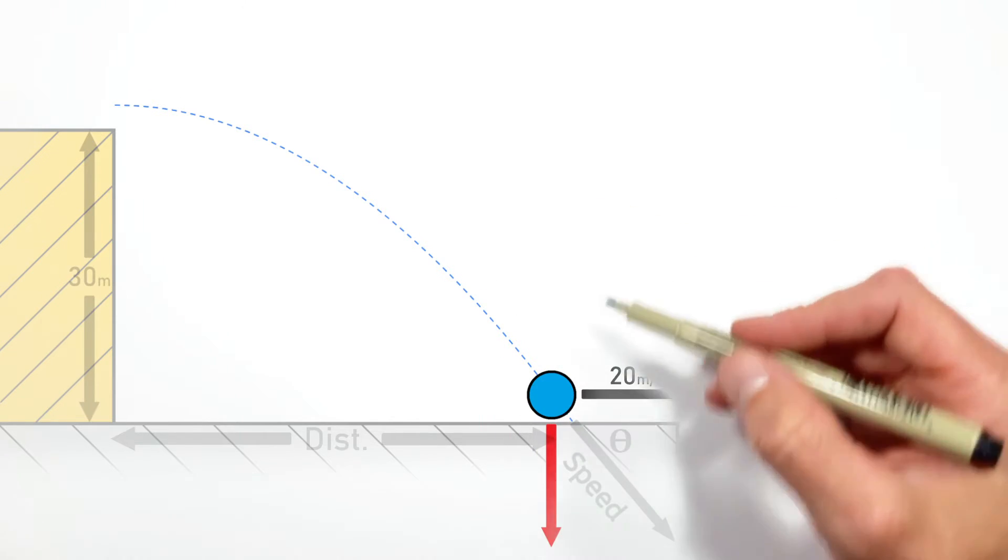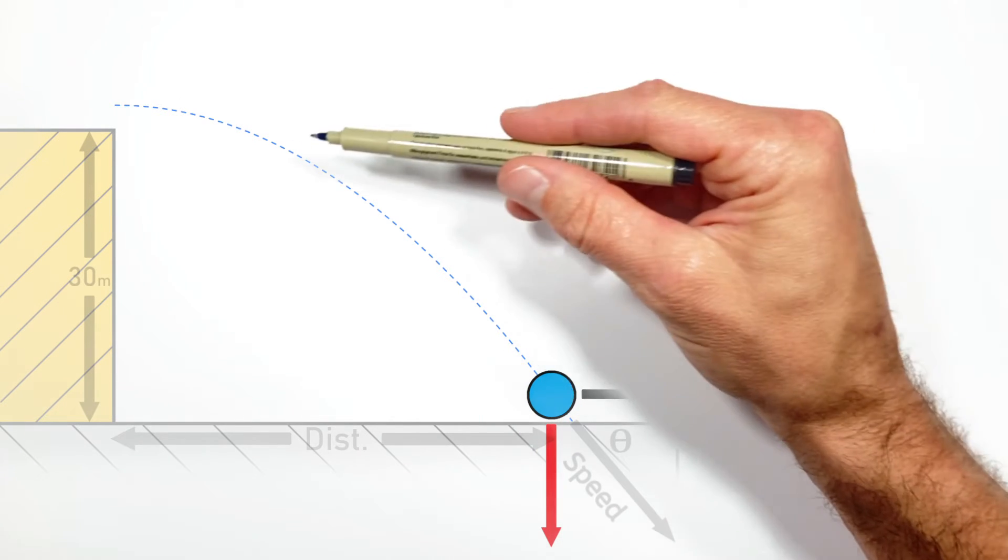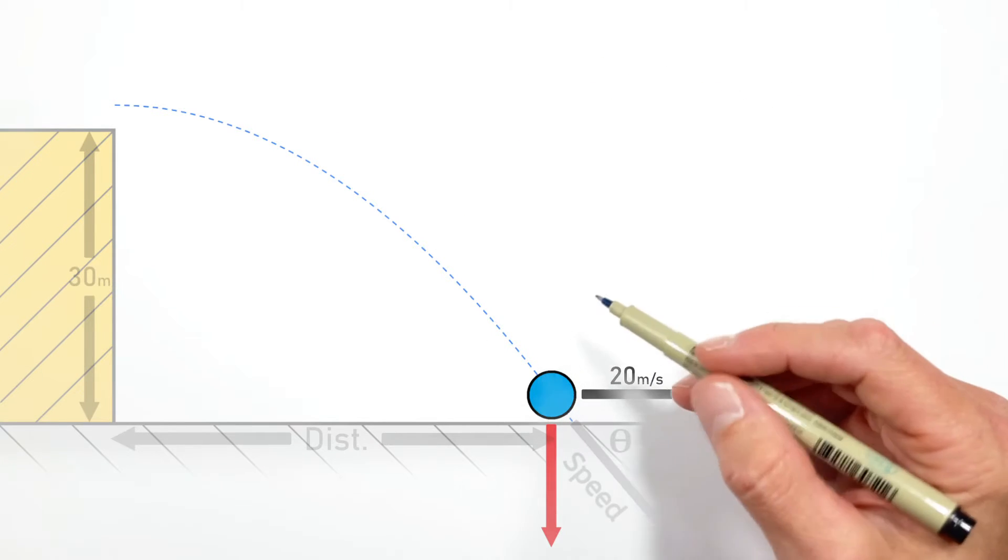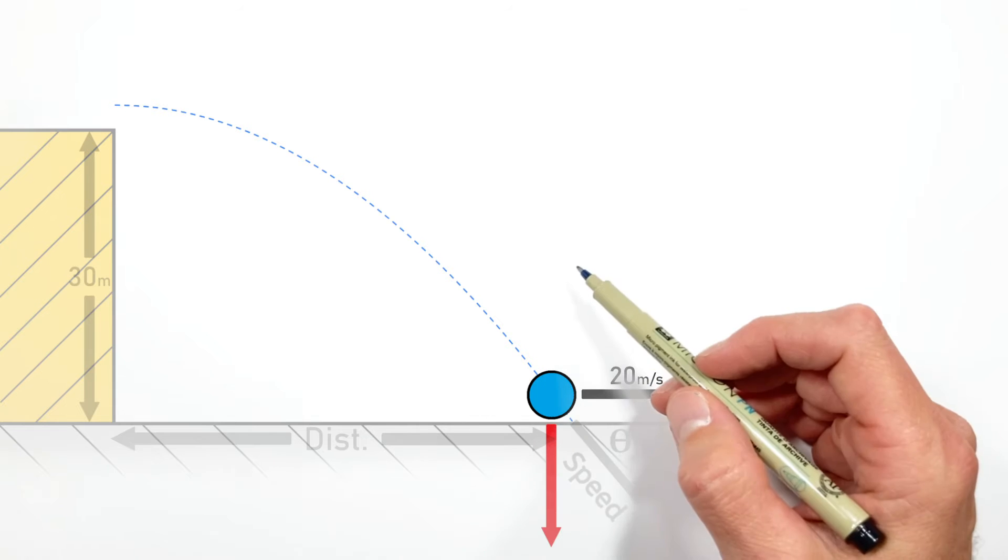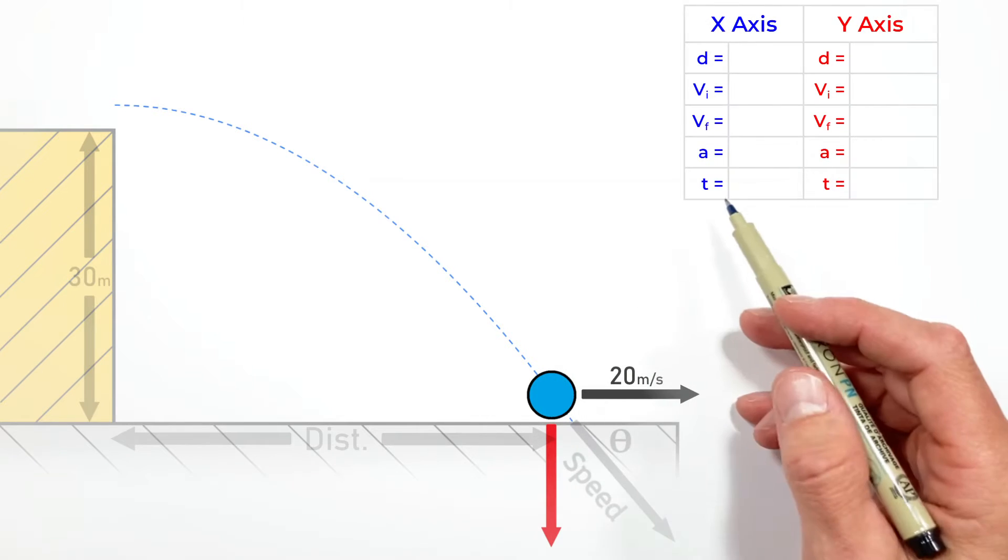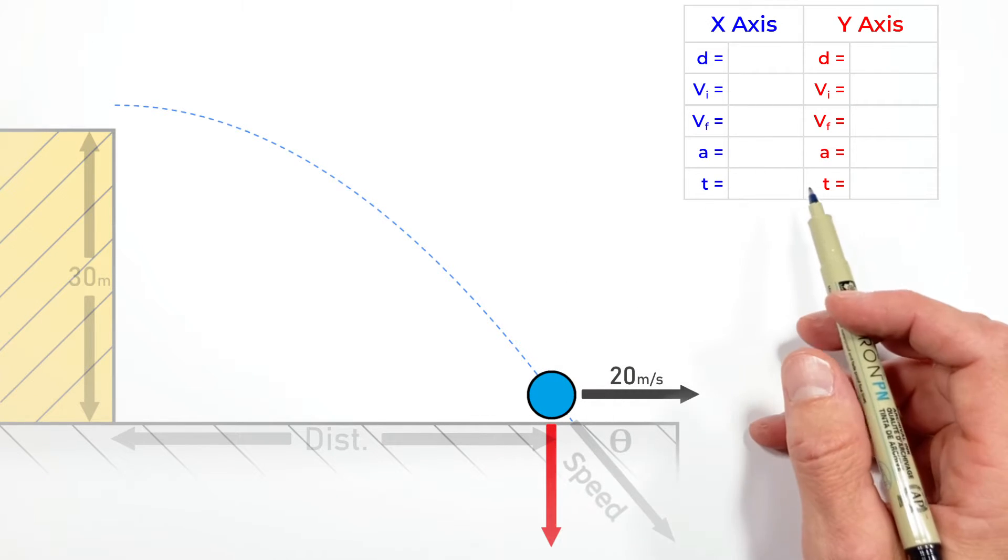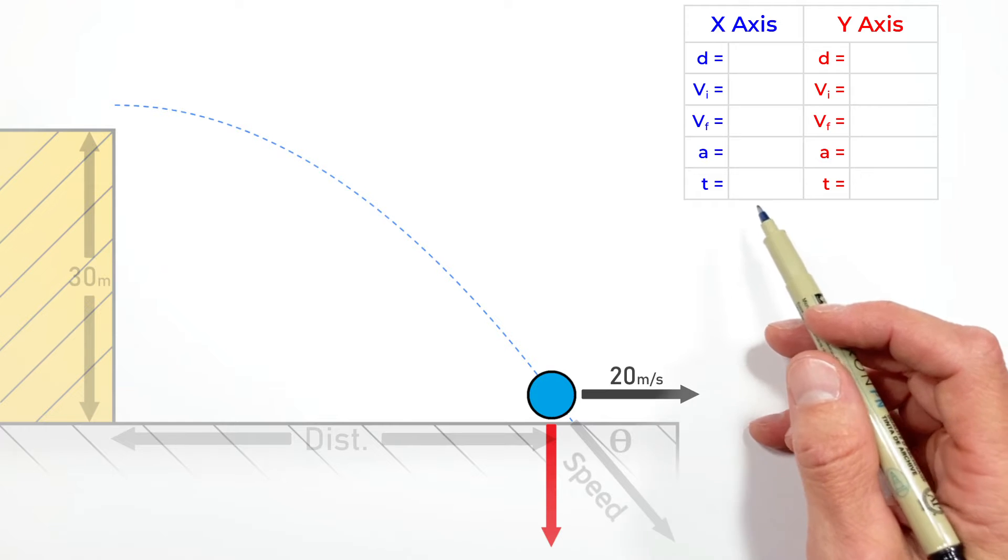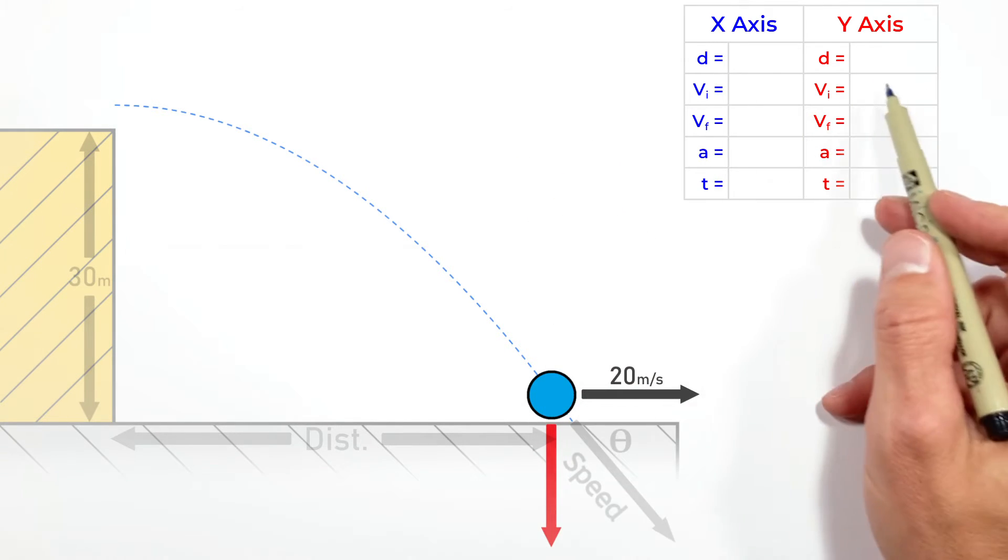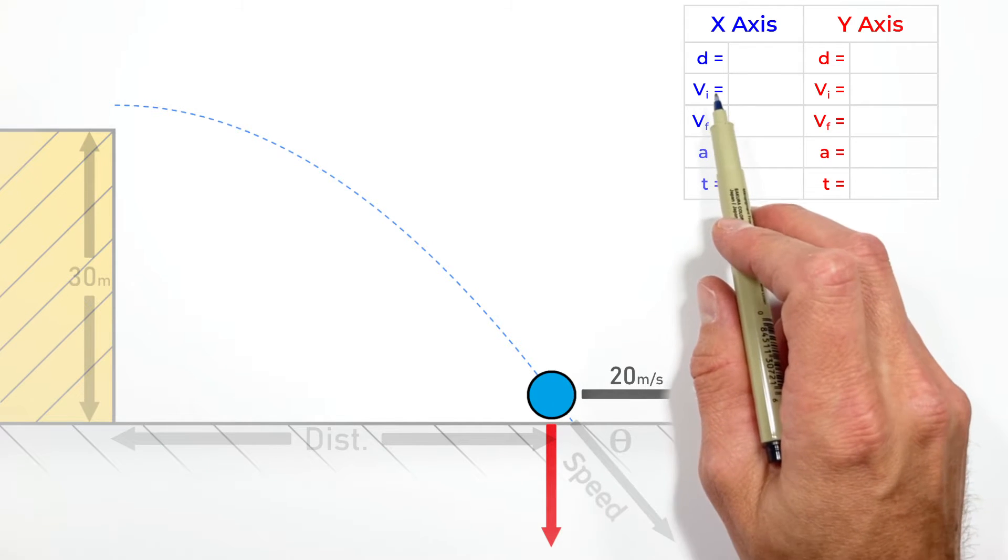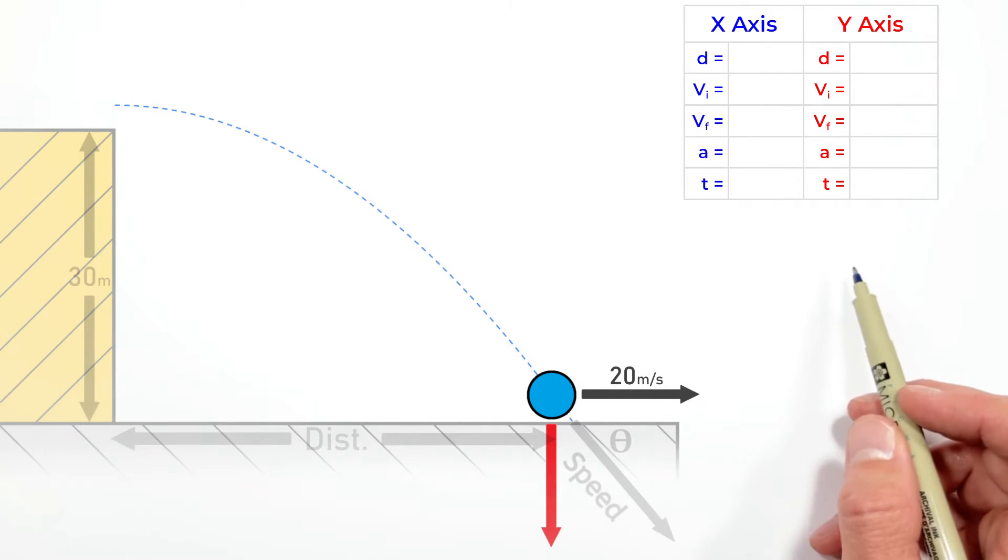What that means in practice is that to analyze the motion of this ball, we need to break it up into two axes: the horizontal and vertical axes, or the x and y axis. Anytime I'm dealing with a projectile motion problem, I like to lay out a table listing the kinematic variables for both axes.